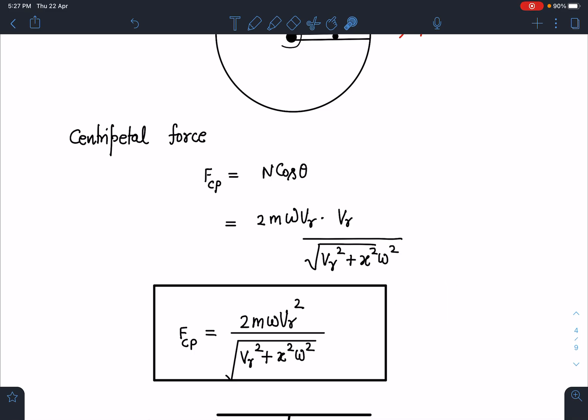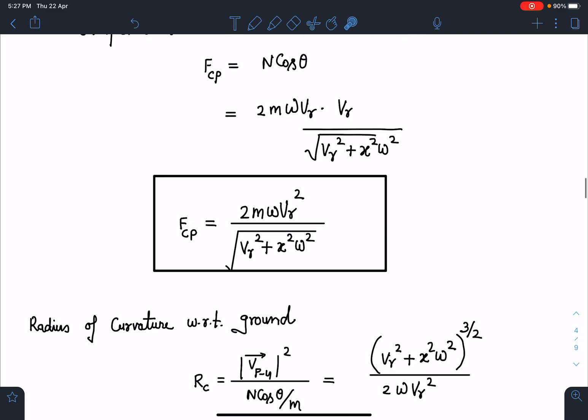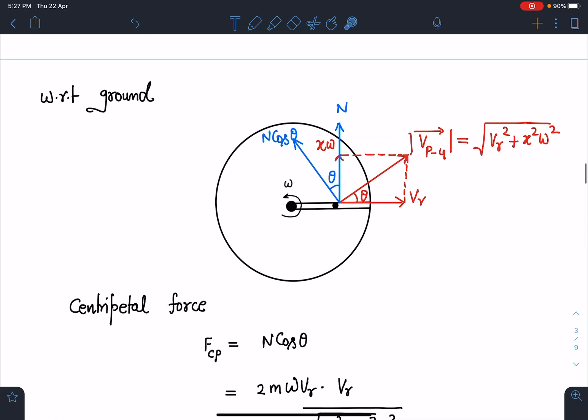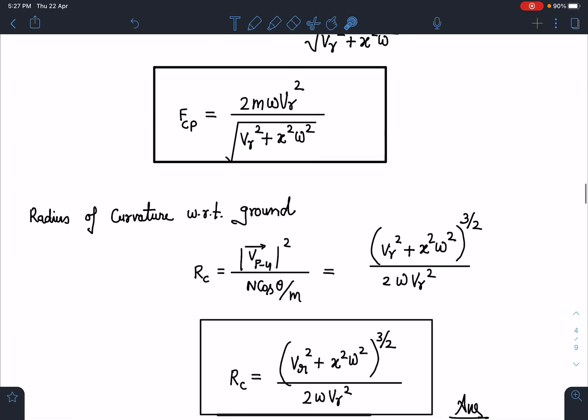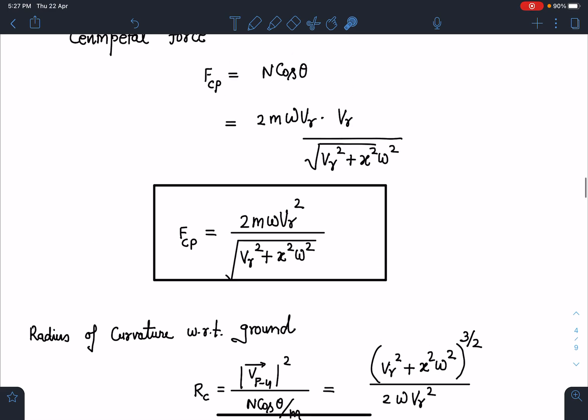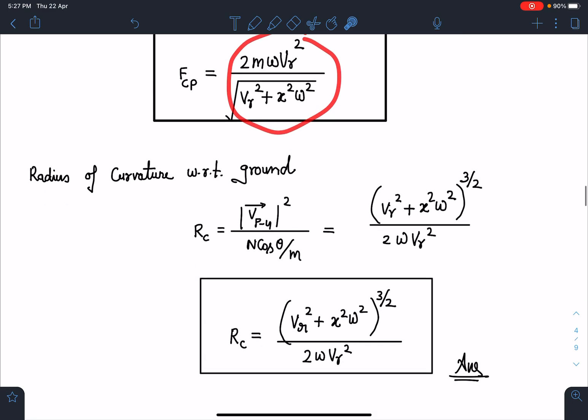Now radius of curvature with respect to ground frame. In ground frame I can write v square divided by a perpendicular. The acceleration component which is perpendicular to the velocity, the overall force which is acting on this particle is normal reaction alone. So its component in this direction is going to give us a perpendicular. I can write here this radius of curvature is nothing but velocity of particle with respect to ground whole square of this divided by N cos theta by m. This is N cos theta value by the way, so divided by m.